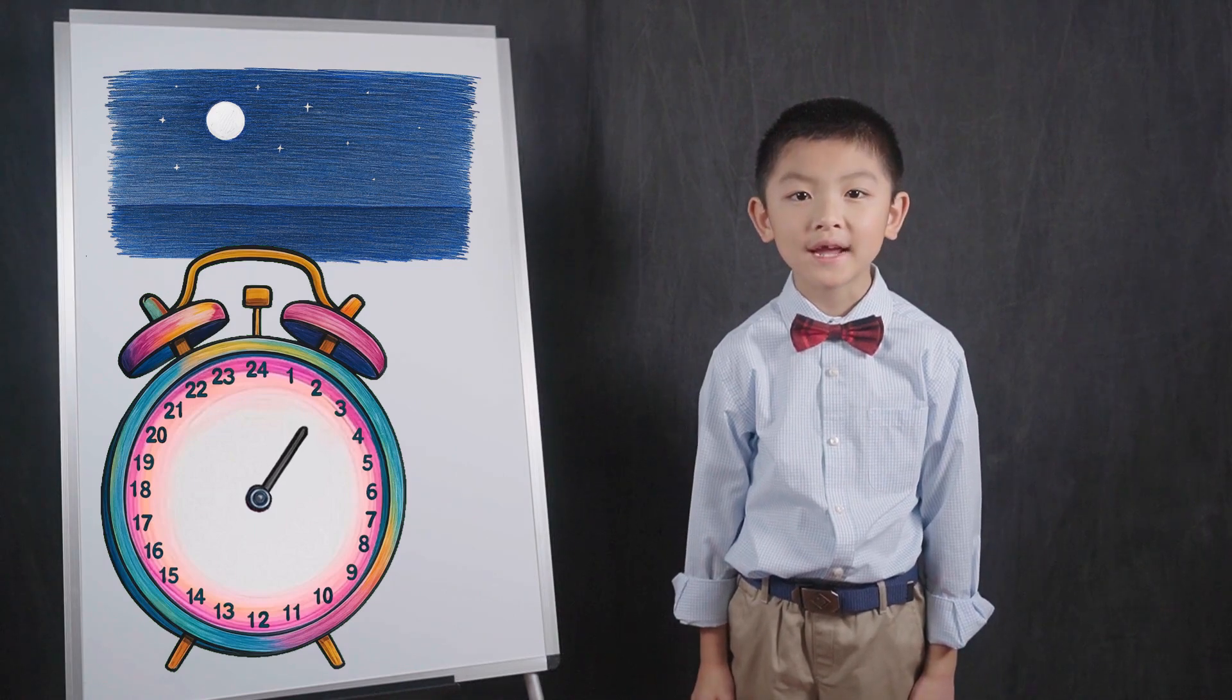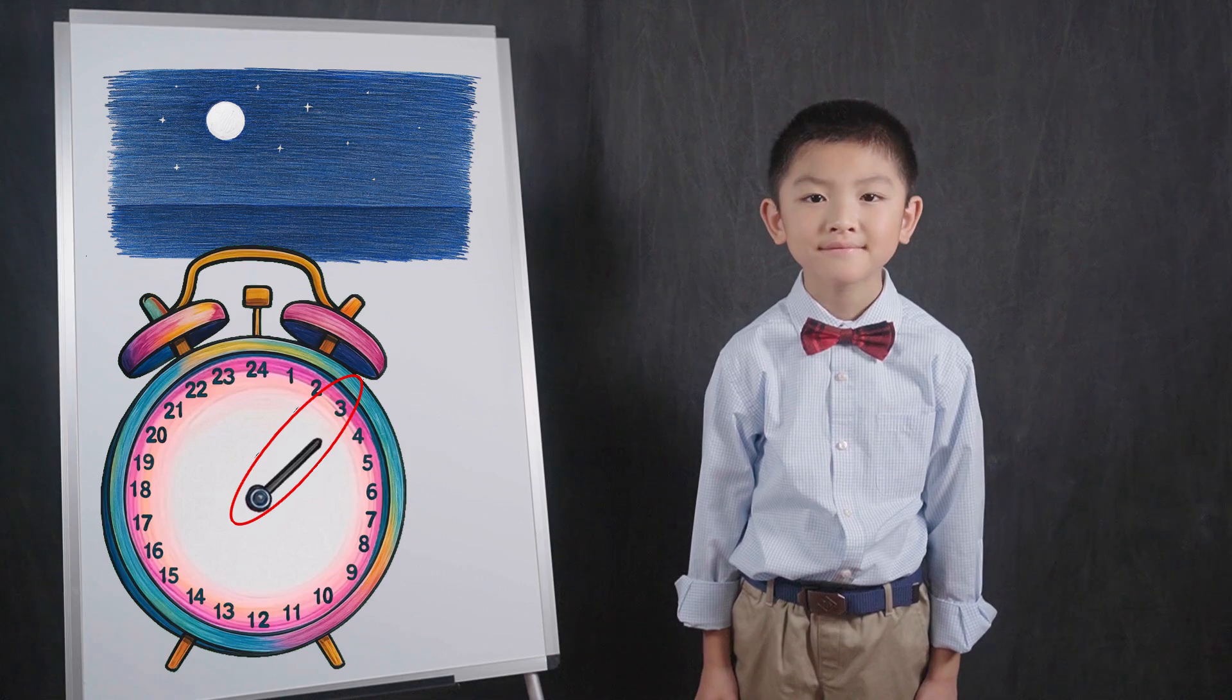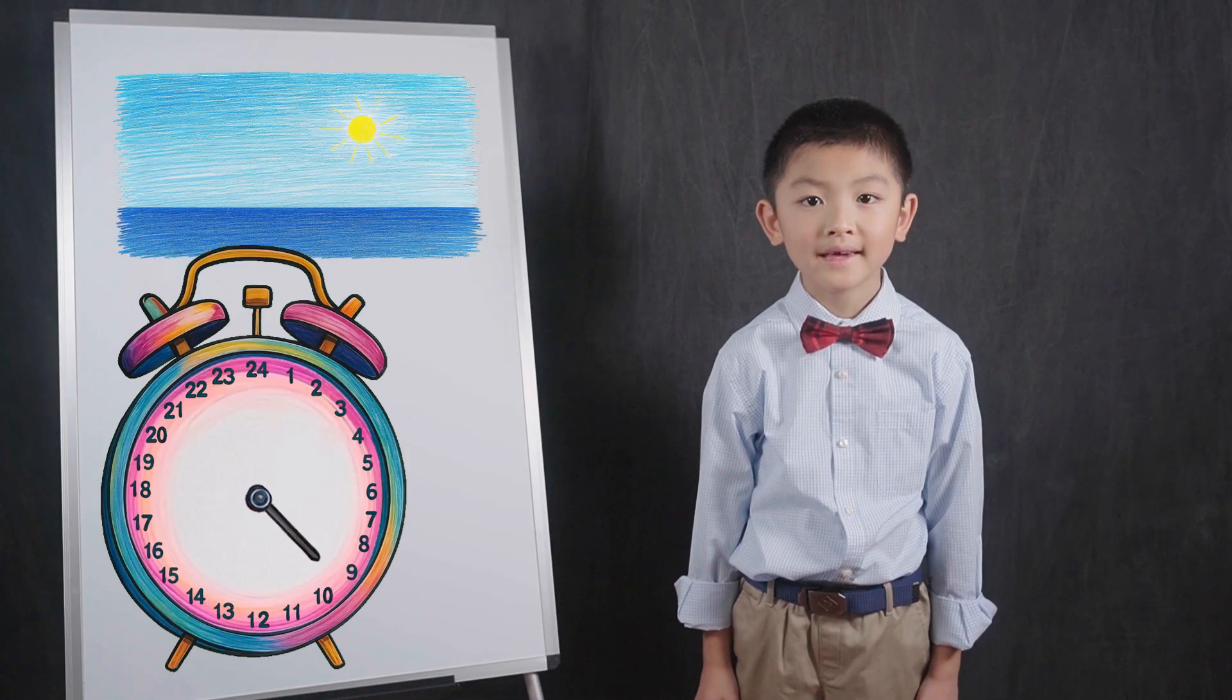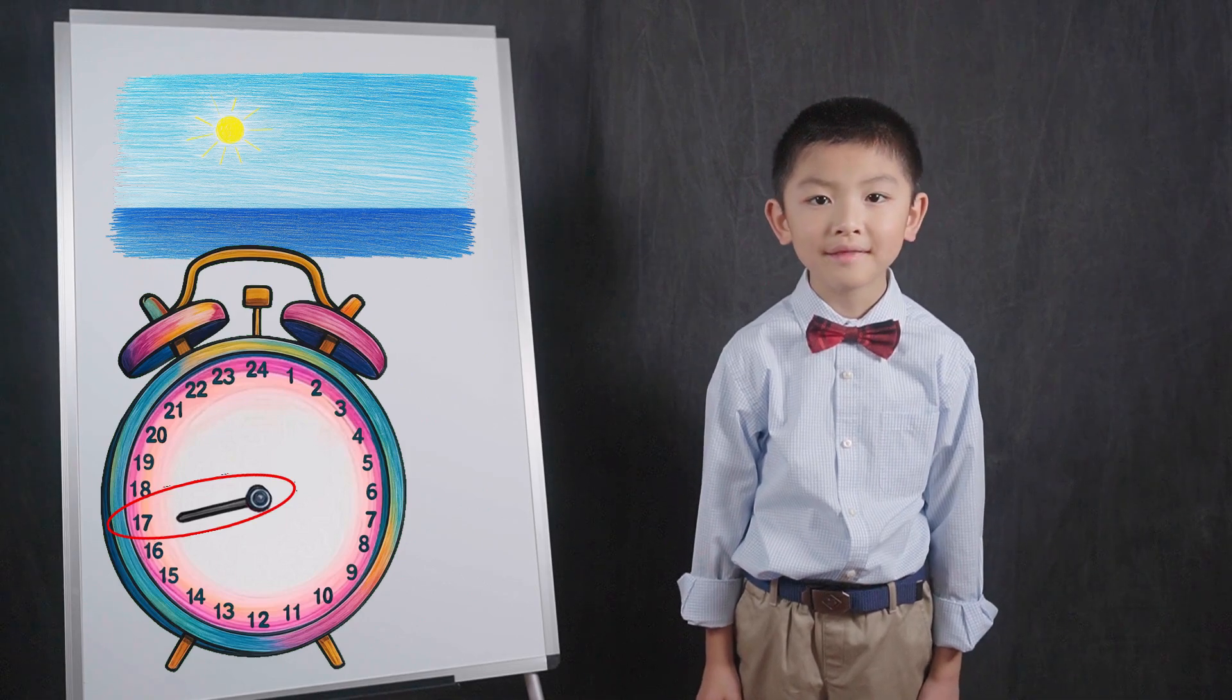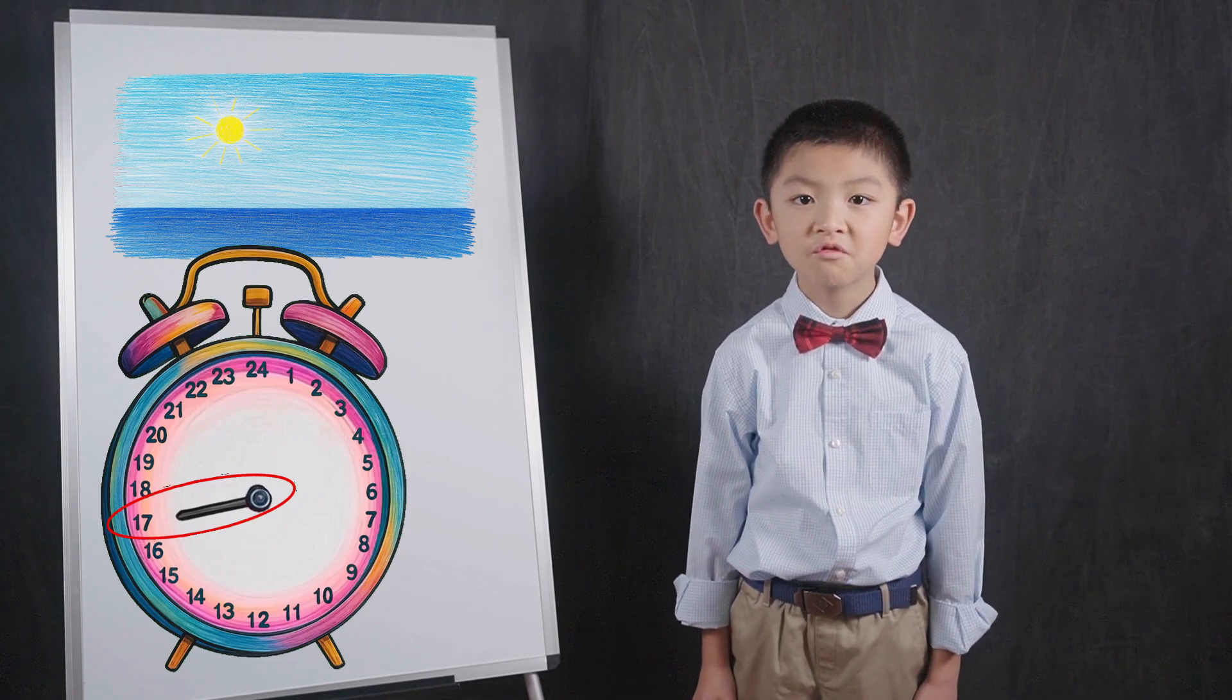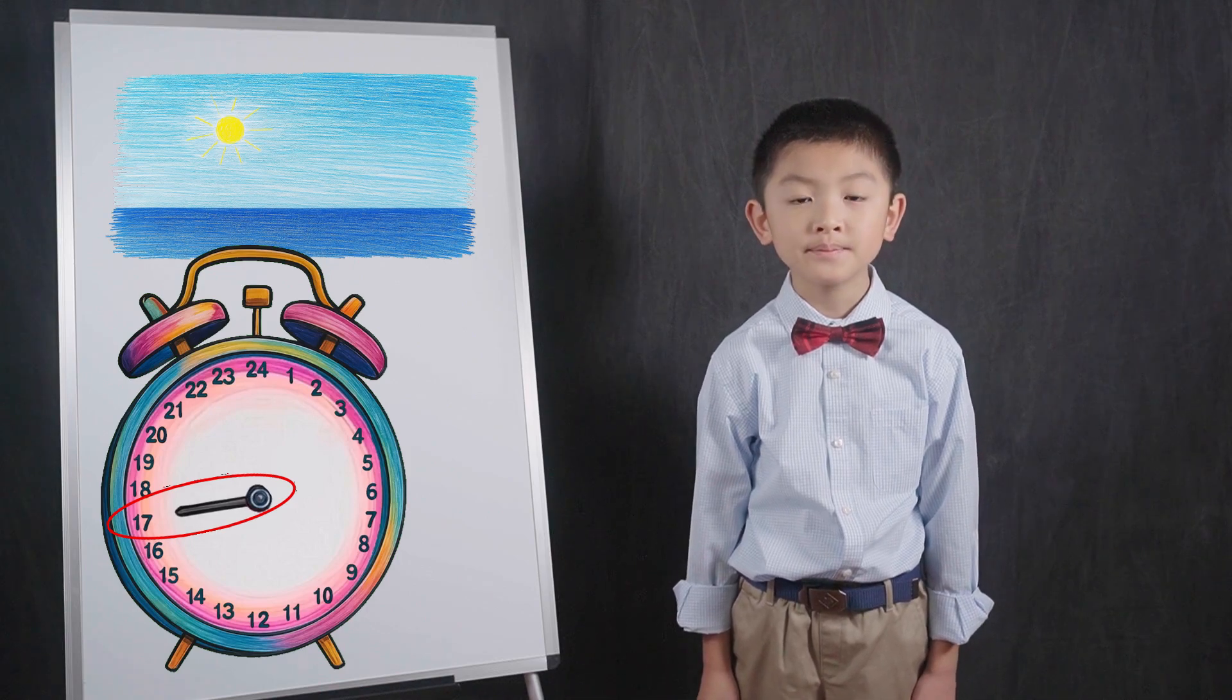When the hour hand is on the 3, it is the 3rd hour of the day. When the hour hand is on the 17, it is the 17th hour of the day. So to read the hour, you just look at which number the hour hand is pointing to.